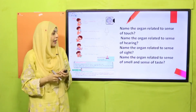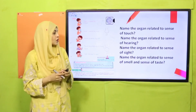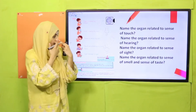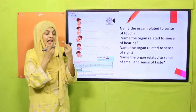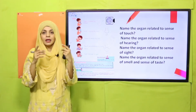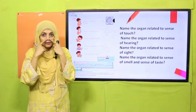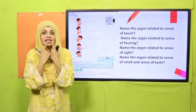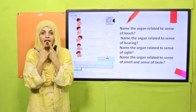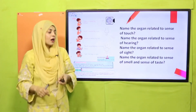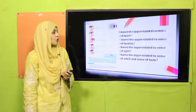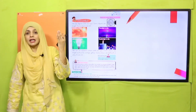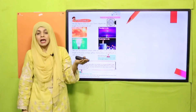Name the organ related to the sense of smell and sense of taste. Sense of smell — it is the nose. Sense of taste — it is the tongue. Very nice, my dear students! Now we will move towards the sense of sight.